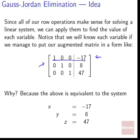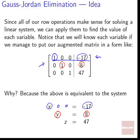For example, a 1 in the first row with zeros elsewhere means x equals the constant in that row — say negative 17. The 1 in the y column means y equals 8, and the 1 in the z column means z equals 47. We've solved the system just by moving stuff around in the augmented matrix. We know this is valid because our row operations are the same as working with the linear system, so we can convert back and read off our answers.